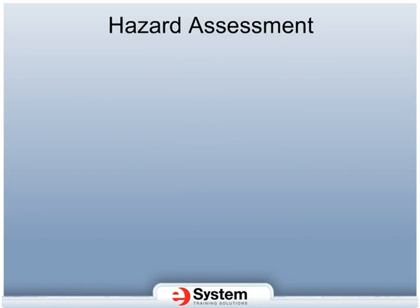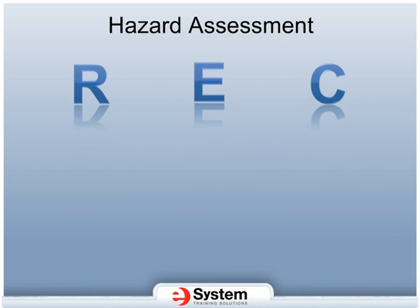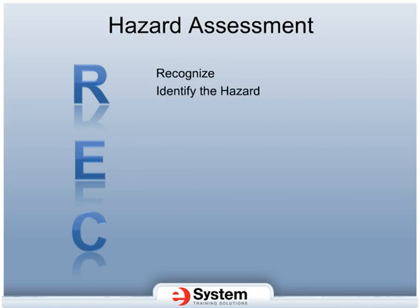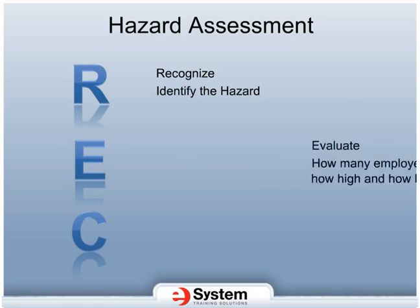When developing a fall protection plan for any work site, you should go through a hazard assessment process. One method to use is called the REC method — REC means Recognize, Evaluate, and Control. The goal of the first step, Recognize, is to determine what is a fall hazard. A fall hazard exists whenever your feet are six feet or more above a lower surface. In order to evaluate the fall hazard, we must understand the different types of environments we are exposed to and determine the severity of the hazard. This allows you to decide on the best option for controlling the hazard.